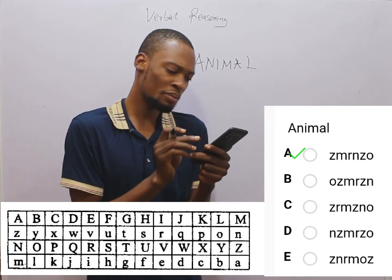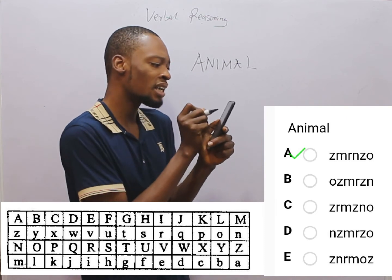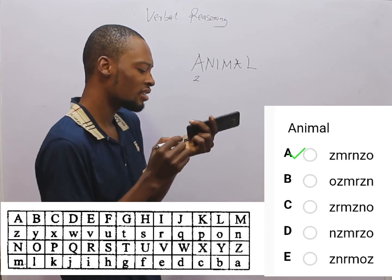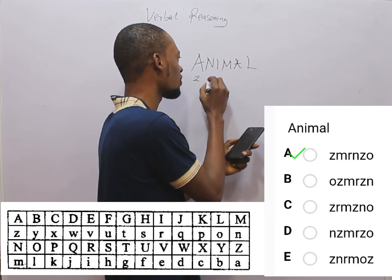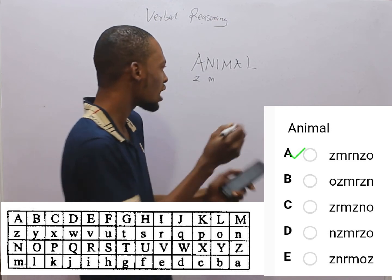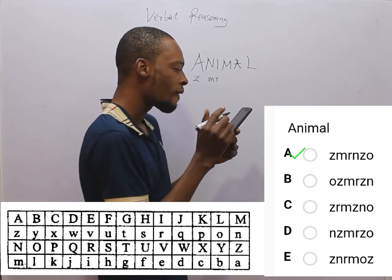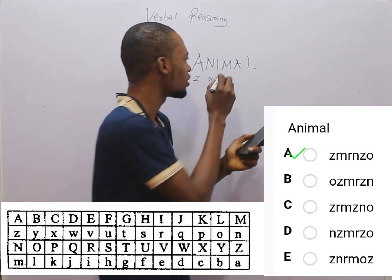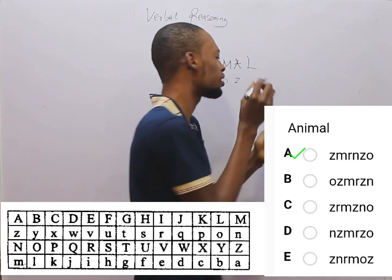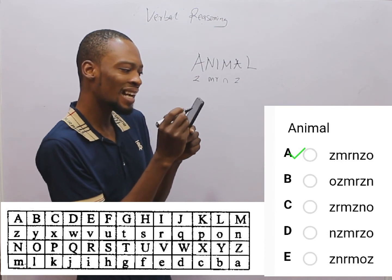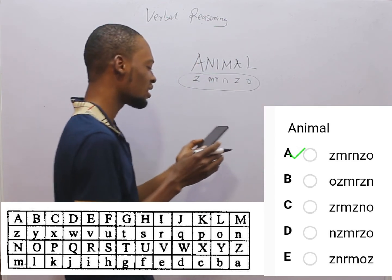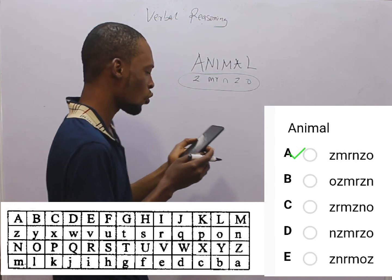So: capital A — under capital A what do you have? Small z. The next letter, capital N — under capital N what do you have? Small m. The next, capital I — what is directly under it in the box? Small r. The next, capital M — what is directly under it? Small n. The next, capital A — small z. Finally, capital L — under L what do you have? Small o. So the small letter representation is z, m, r, n, z, o — option B is the correct option.